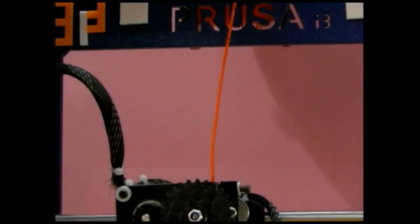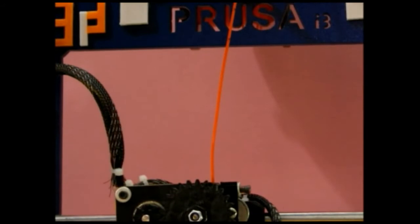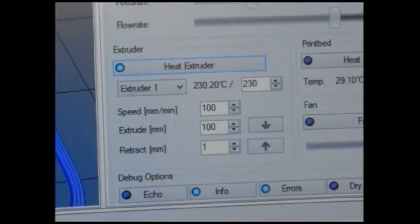Now in Repetier Host, set the nozzle temperature or heat extruder to 230 degrees Celsius. Remember, the filament will melt easily at 230 degrees Celsius. So keep at its maximum temperature.